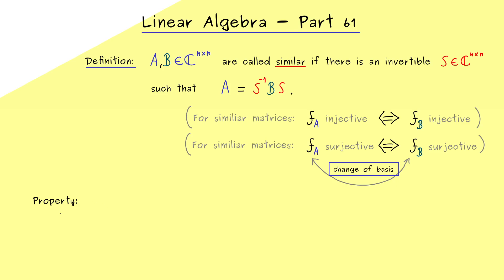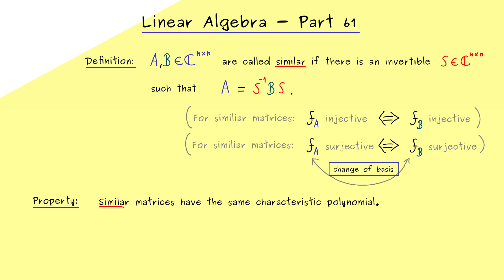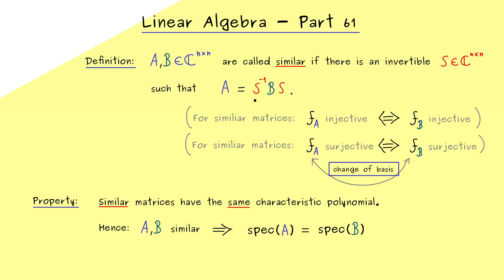At this point, we are very interested in eigenvalues. It turns out that similar matrices have the same characteristic polynomial. Hence, if A and B are similar, the spectrum of A and B are the same. So they have exactly the same eigenvalues and also the algebraic multiplicities are the same as well. Therefore, you should remember: such a transformation with an invertible matrix S does not change the spectrum and not the algebraic multiplicities.